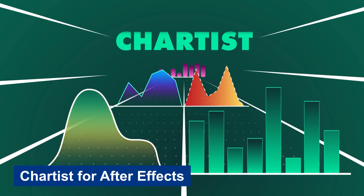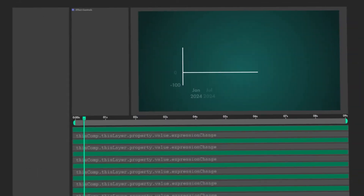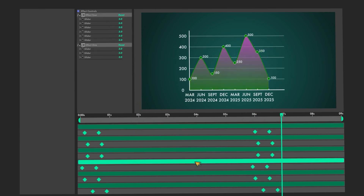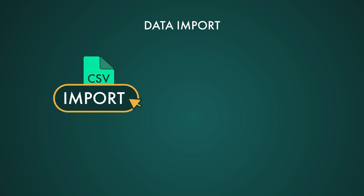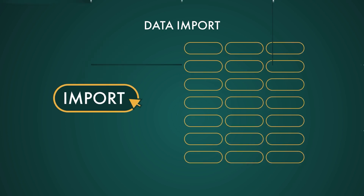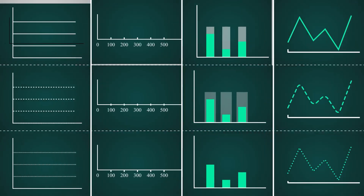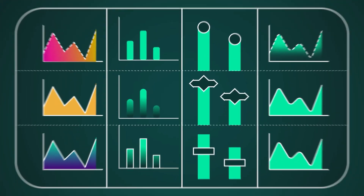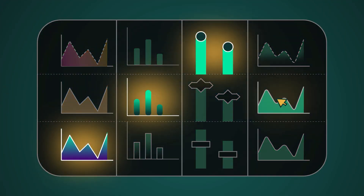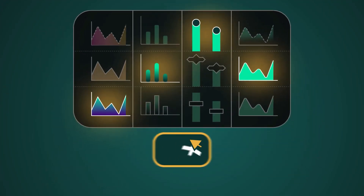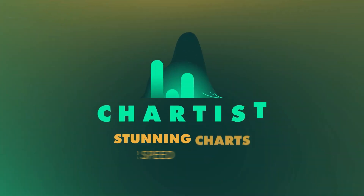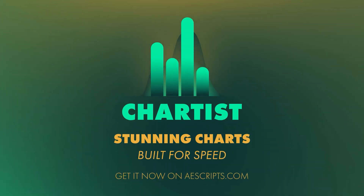Chartist for After Effects. Stunning bar charts and line graphs, built with ease, speed, and unmatched performance. A powerful After Effects plugin designed to streamline the creation of animated bar charts and line graphs. This tool enables users to efficiently produce high-quality, data-driven animations, making it ideal for professionals in motion design, explainer videos, and data visualization. The plugin emphasizes ease of use, rapid rendering, and exceptional performance, allowing for seamless integration of complex data into visually compelling graphics.